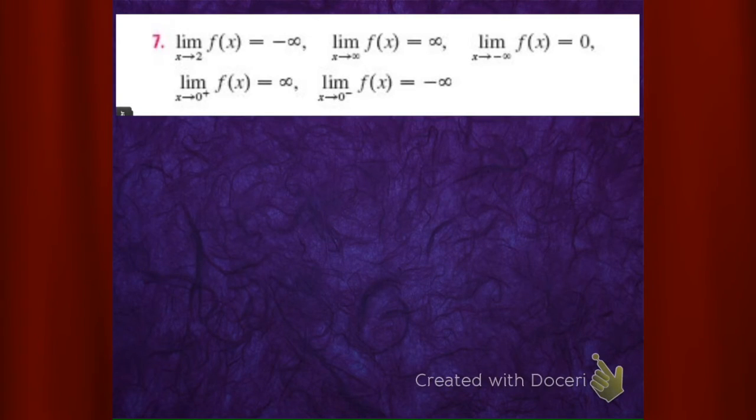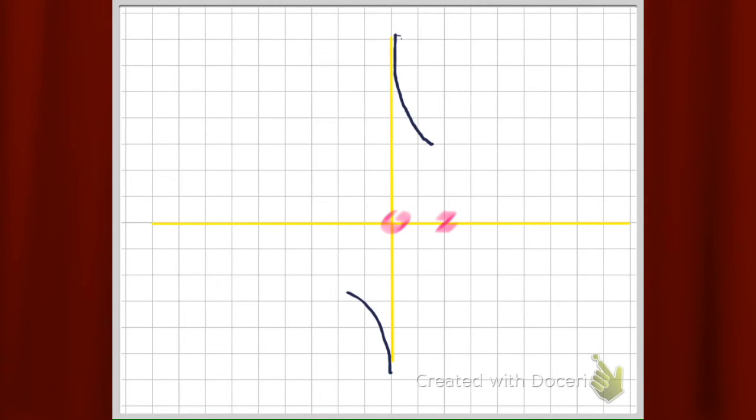Then let's look at that 2. As it approaches 2, as x approaches 2, from the left and from the right, it's going to go to negative infinity. So as it approaches 2 from the left, I could draw that nicer. Apparently I can't. It needs to be a function. I doubled back on myself. That's not a function.